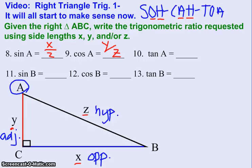And lastly, the tangent of angle A, so we're still looking from the perspective of angle A, so my labels are still correct. The tangent is opposite over adjacent. It looks like opposite is X, adjacent is Y. So my ratio will be X over Y.